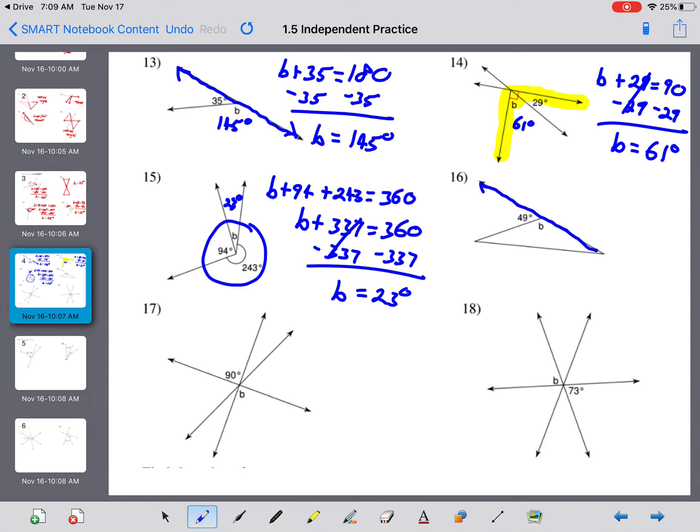16 here. You have a linear pair. B plus 49 equals 180. Minus 49 on both sides. And B equals 131.